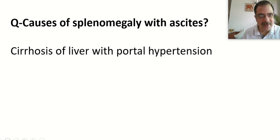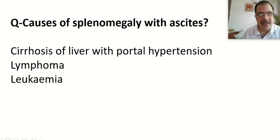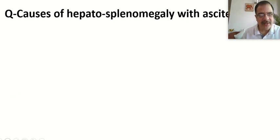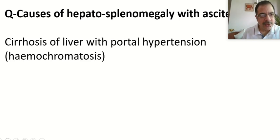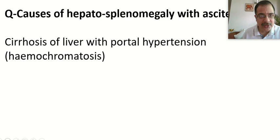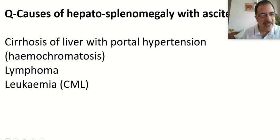Causes of splenomegaly with ascites: the number one cause is portal hypertension; others include lymphomas, leukemias, and disseminated tuberculosis. Causes of hepatosplenomegaly with ascites: cirrhosis with portal hypertension — specifically hemochromatosis (where the liver is enlarged, unlike typical cirrhosis where it is normal or reduced in size) — as well as hematological malignancies and disseminated tuberculosis.